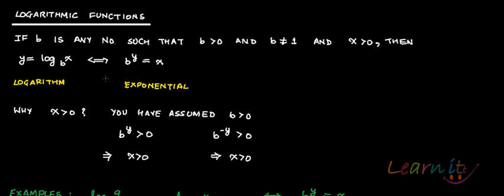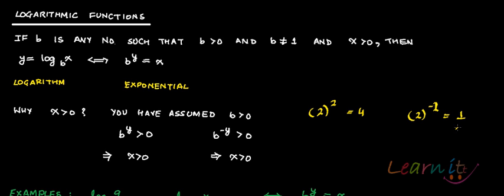Why are we assuming that x should be greater than 0? Because b is greater than 0. When b is greater than 0 and you raise it to any power — positive or negative — the result has to be positive. For example, if b is 2 and you raise it to the power of 2, the result is 4. And 2 to the power minus 2 is 1 upon 4, which is still greater than 0. So x has to be greater than 0.